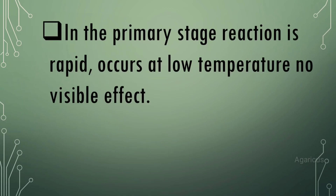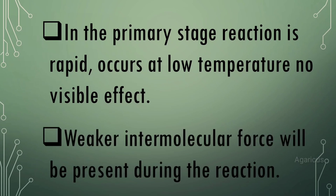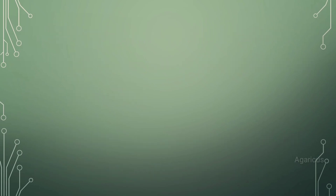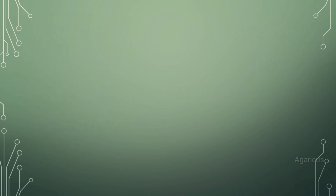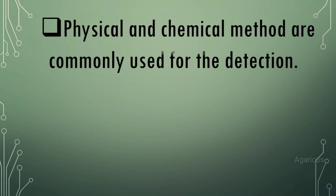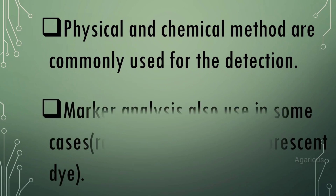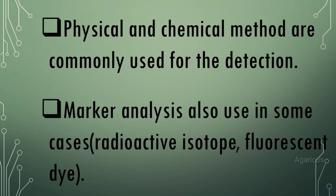In the primary stage, the reaction is rapid, occurs at a low temperature, and there is no visible effect. Weaker intermolecular forces will be present during this reaction. The primary reaction is detected by estimating free and bound antigen or antibody separately in the reaction mixture. Physical and chemical methods are commonly used for detection, and marker analysis is also used in some cases.